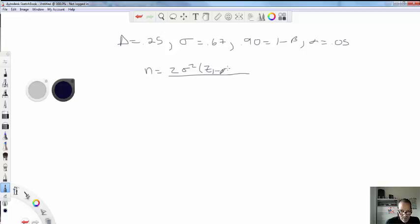That's usually your critical value when you're conducting a test, a t-test or a z-test. That's your z critical value. And we'll go ahead and square that.